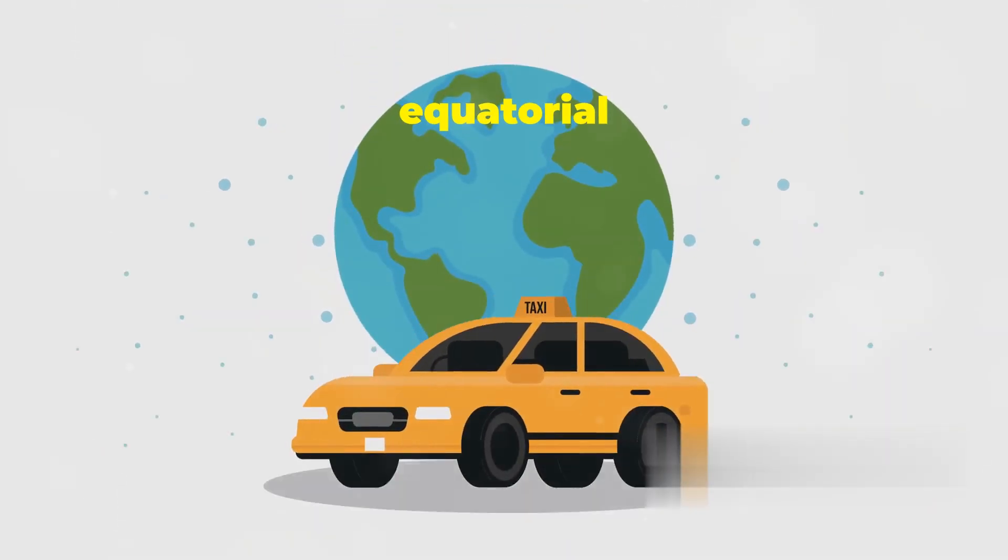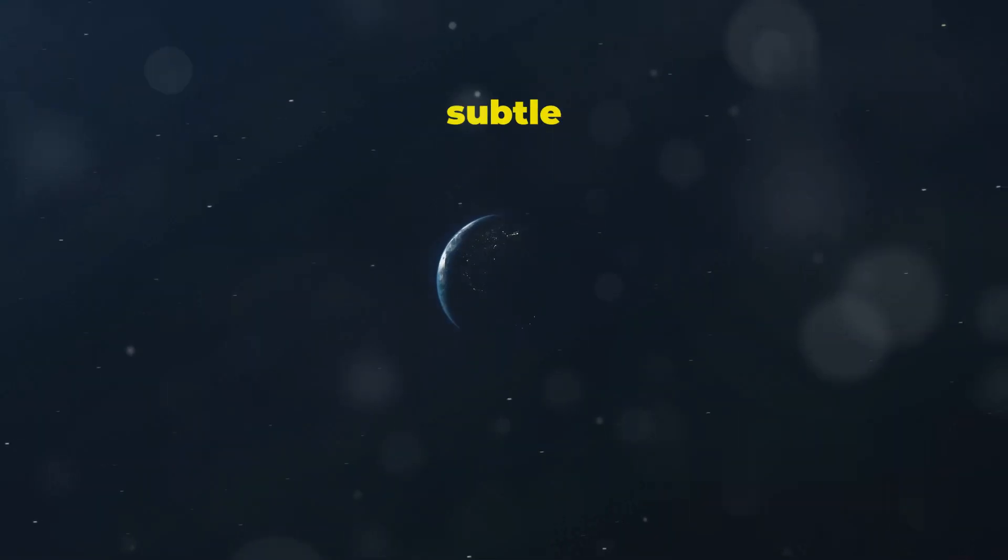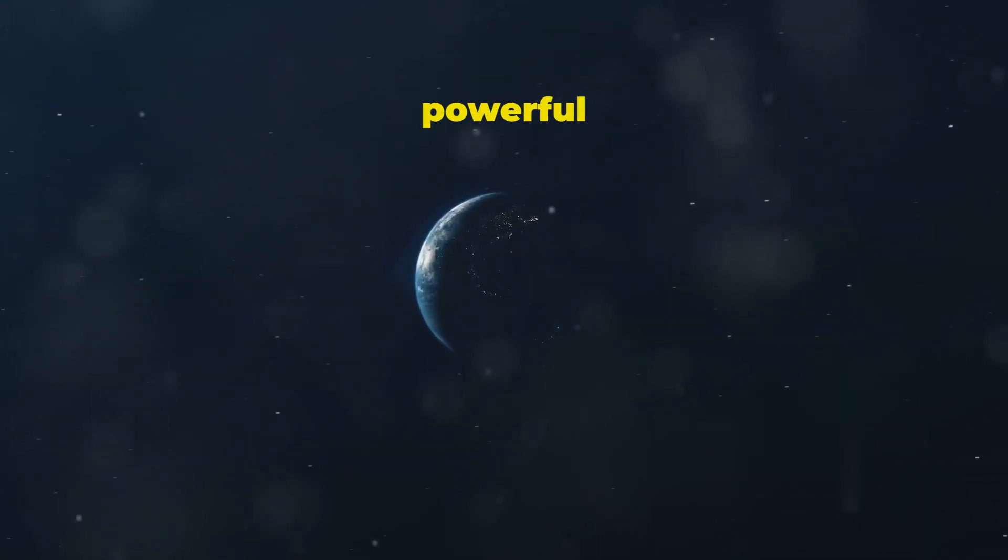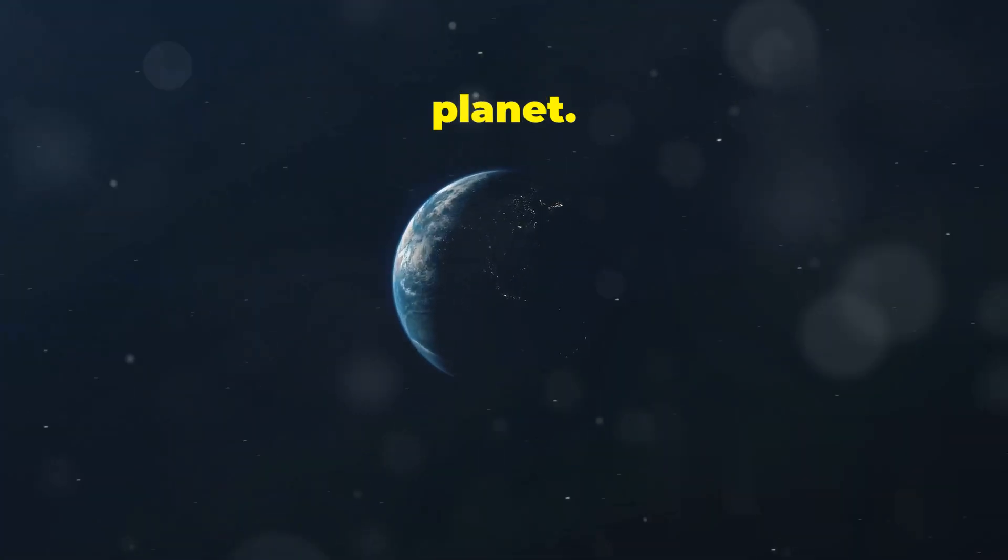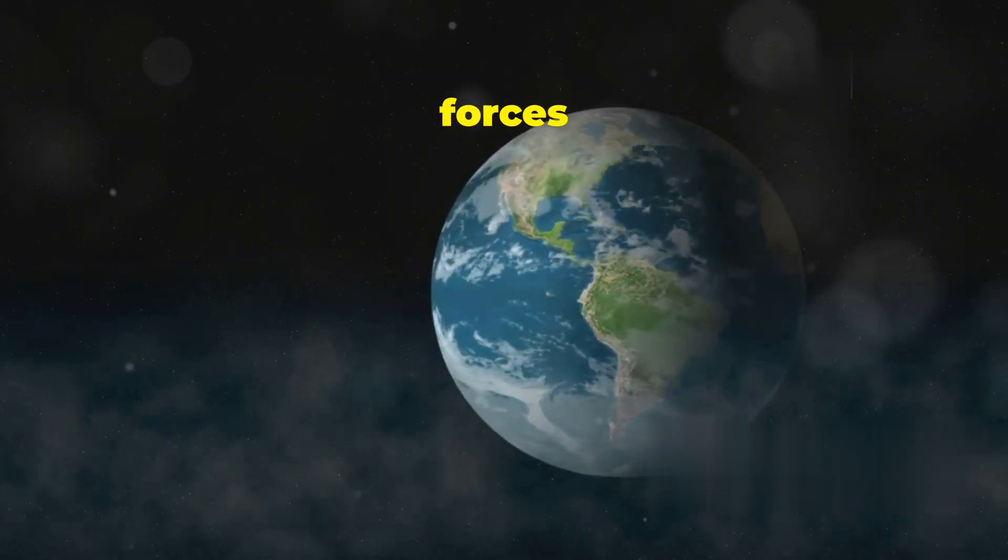The difference between Earth's equatorial and polar diameters is a mere 43 kilometers. This subtle bulge is a testament to the powerful forces that have shaped our planet. Earth is a dynamic entity, constantly responding to the forces acting upon it.